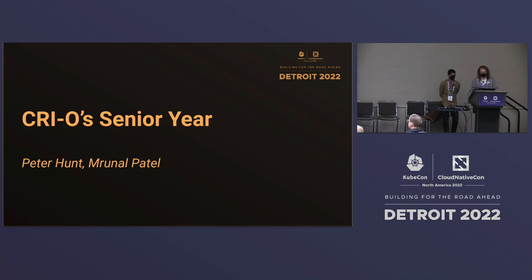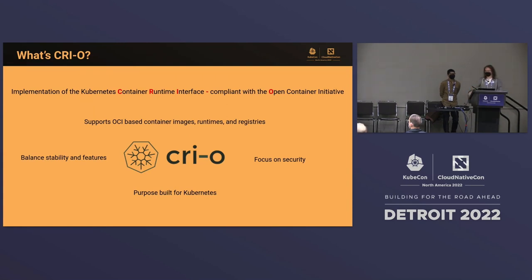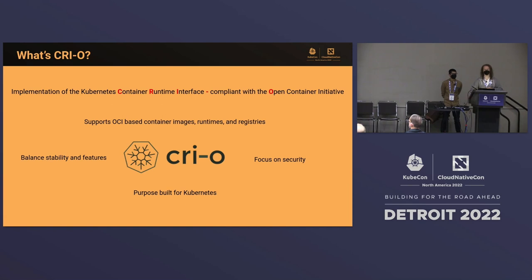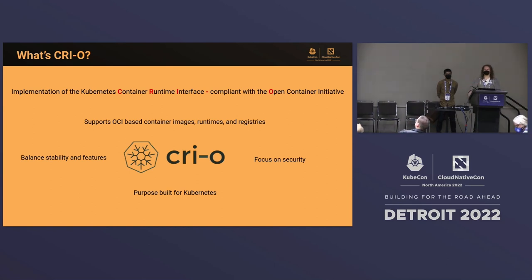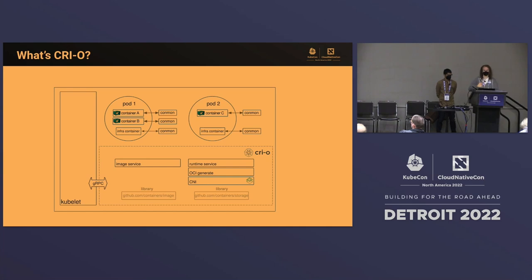We're going to be talking about CRI-O. Quick introduction: what is CRI-O? CRI-O is an implementation of the Kubernetes Container Runtime Interface compliant with the Open Container Initiative. It takes the spot in the stack that Docker used to occupy — it pulls OCI container images and starts containers and pods. It's responsible for all operations underneath the kubelet but before the OCI container runtime. Some design philosophies: a balance of stability and features with a focus on security and performance, and it's purpose-built for Kubernetes.